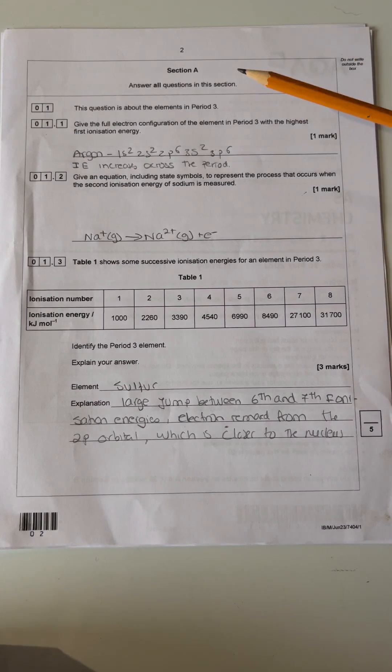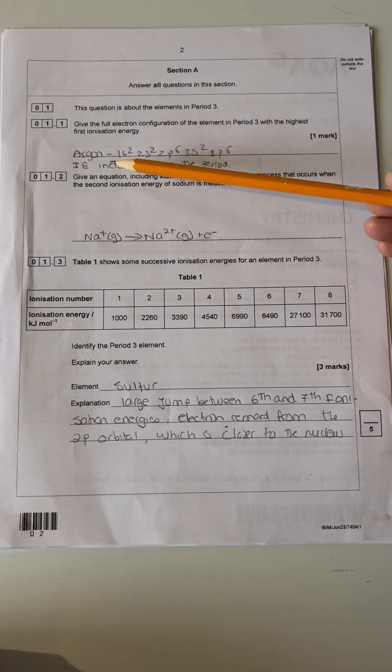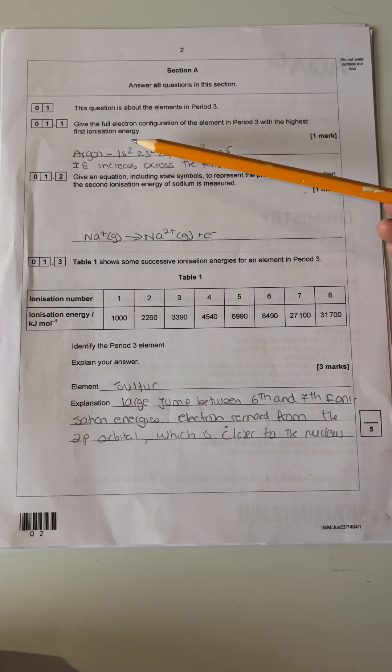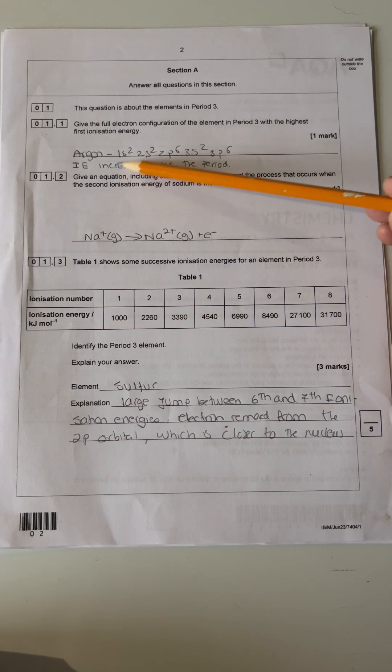Right, let's start with question number one. This question is about the elements in period three. Give a full electron configuration of the element in period three with the highest first ionization energy. The ionization energy increases across the period, so argon is going to have the highest first ionization energy. So you look at argon in the periodic table, you've got 18 electrons, so you do 1s2 2s2 2p6 3s2 and 3p6.